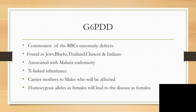G6PD — glucose-6-phosphate dehydrogenase deficiency — is the commonest of all red blood cell enzymatic defects. It is very common among Jews, Blacks (called African-Americans in the United States), and is also found in Thailand, China, and among Indians. It is believed to be associated with malaria endemicity, and it has X-linked inheritance.